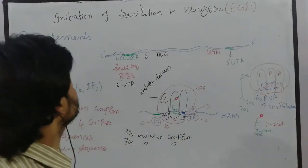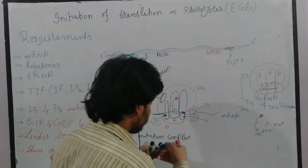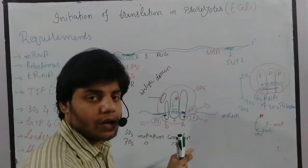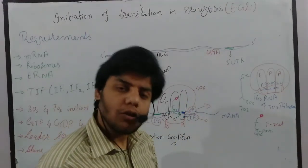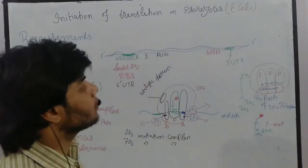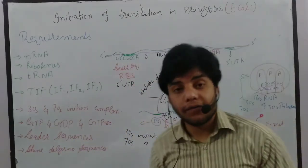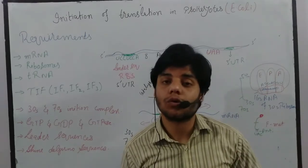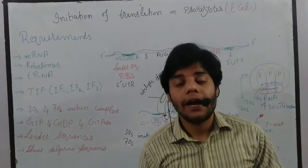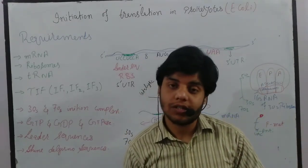When the 50S and 30S subunits, along with the transfer RNA, messenger RNA, and ribosome form a complete complex, we call that the 70S initiation complex. This is the essence of initiation of translation. When the A site is freed, a new transfer RNA will bind there — we will discuss that in the elongation of translation. That is all about initiation of translation in prokaryotes. In the next video we will talk about elongation of translation in detail.